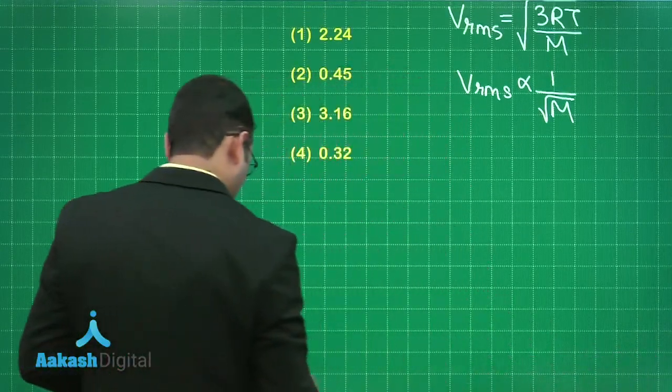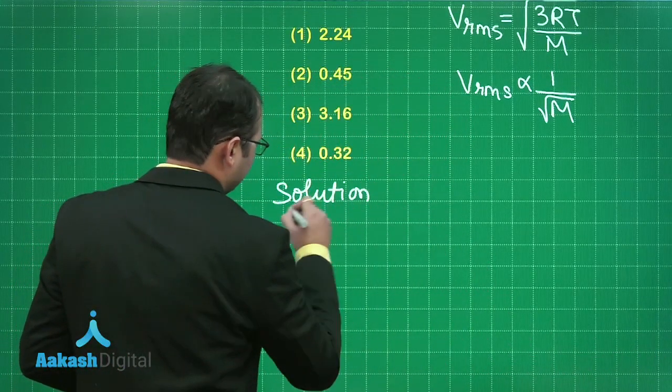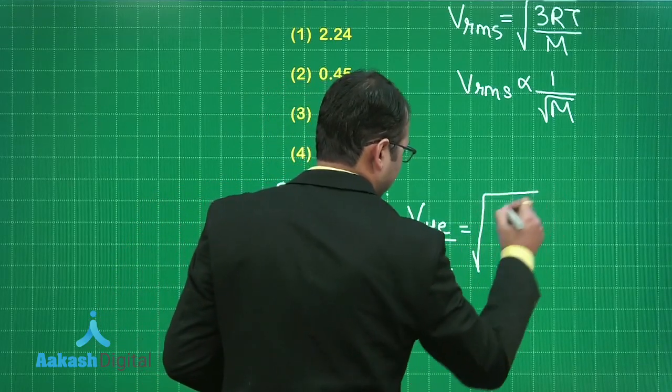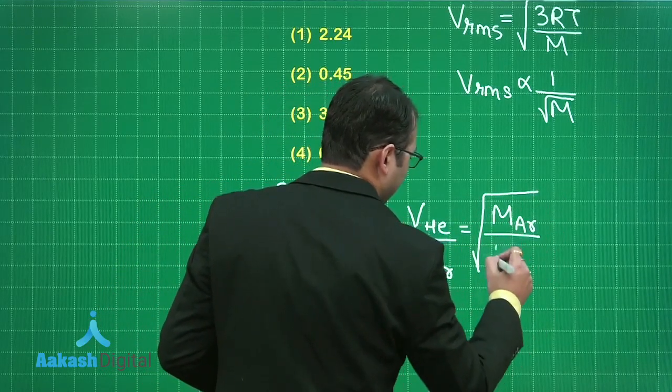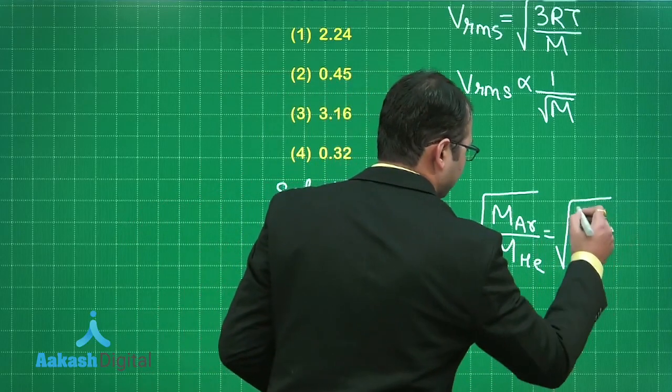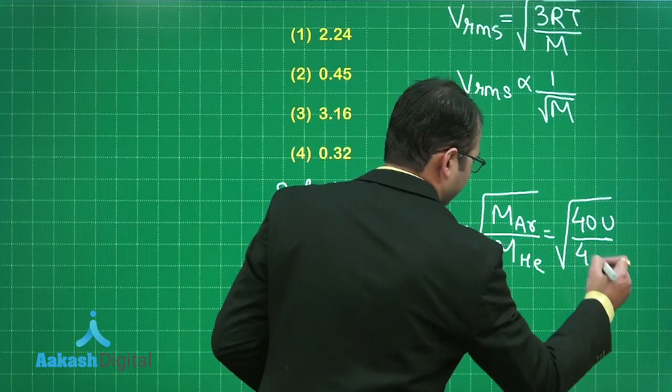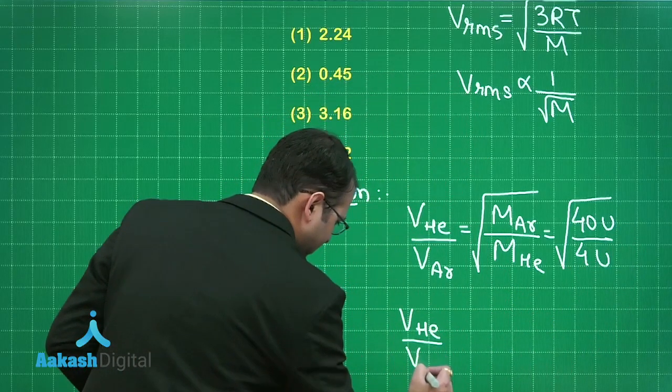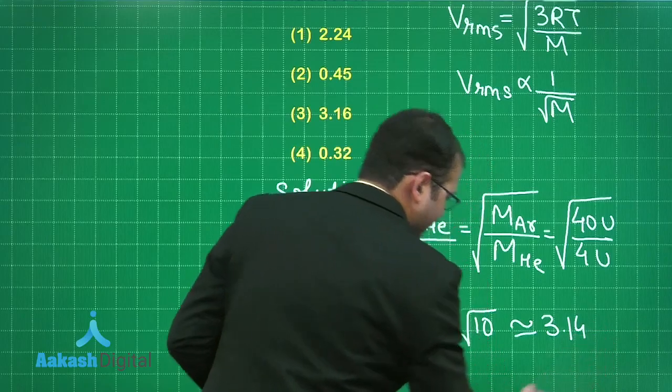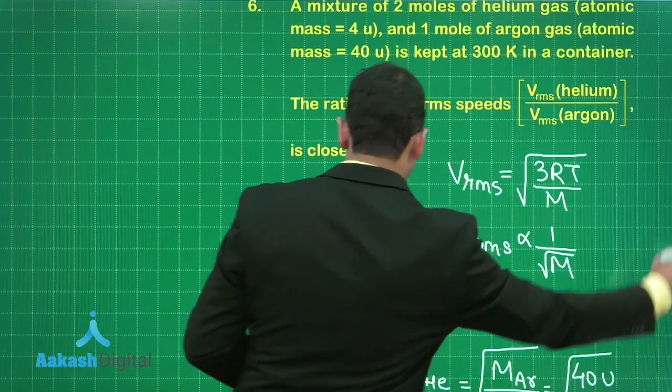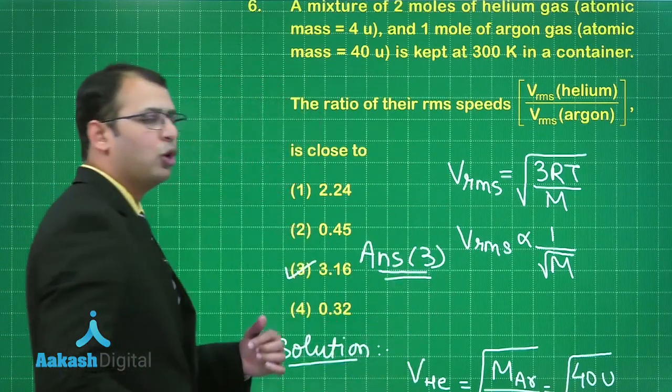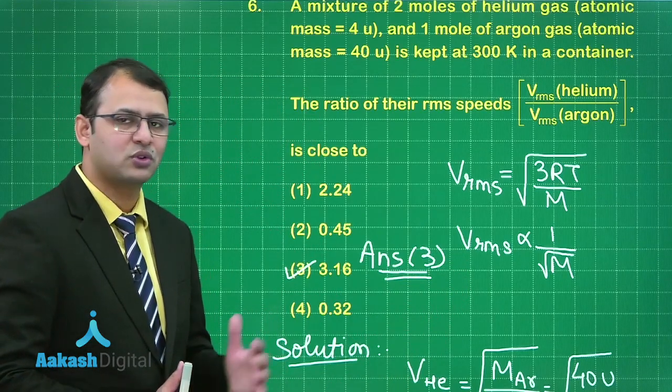So if you just take the ratios of RMS velocity of helium to RMS velocity of argon, it will be written as molecular mass of argon divided by molecular mass of helium as the velocity and mass portion is inversely proportional. So let's put on the values here. It is simply 40u as per the question data and this is 4u. Solving this you will get helium's velocity by argon's velocity would be under root of 10 which is nearly equal to 3.16. Now let's see which is the best suited option here. So option number 3 is the best suited option. Hope you have understood this question very well. Let's move on to our next question that is question number 7.